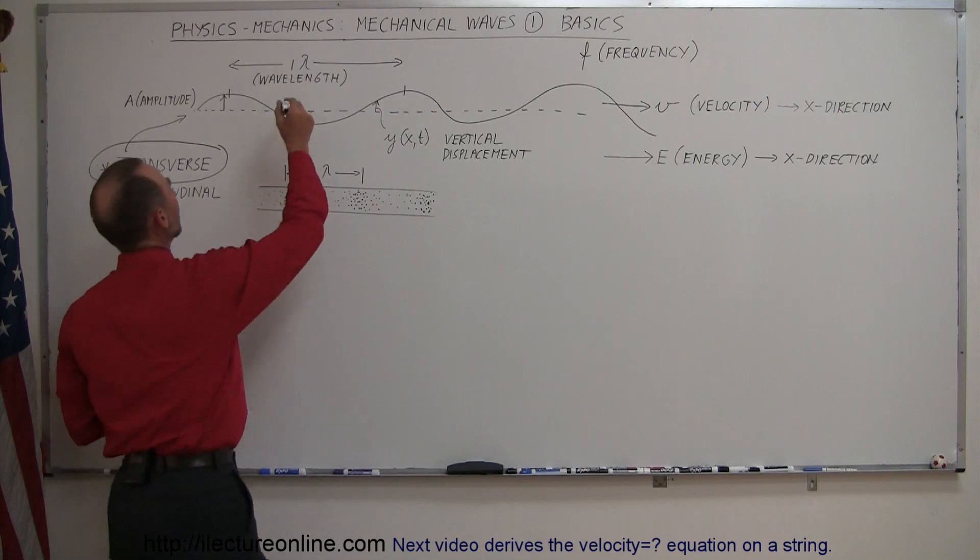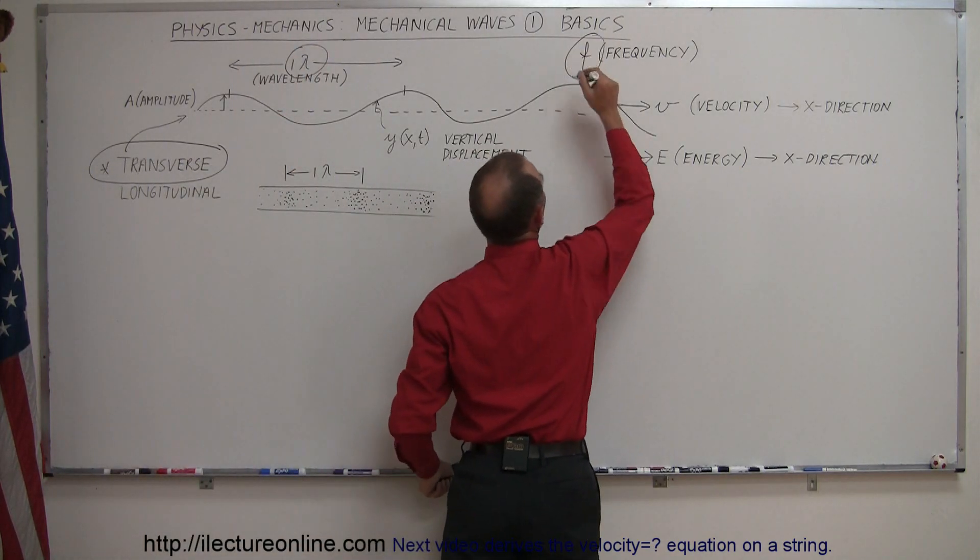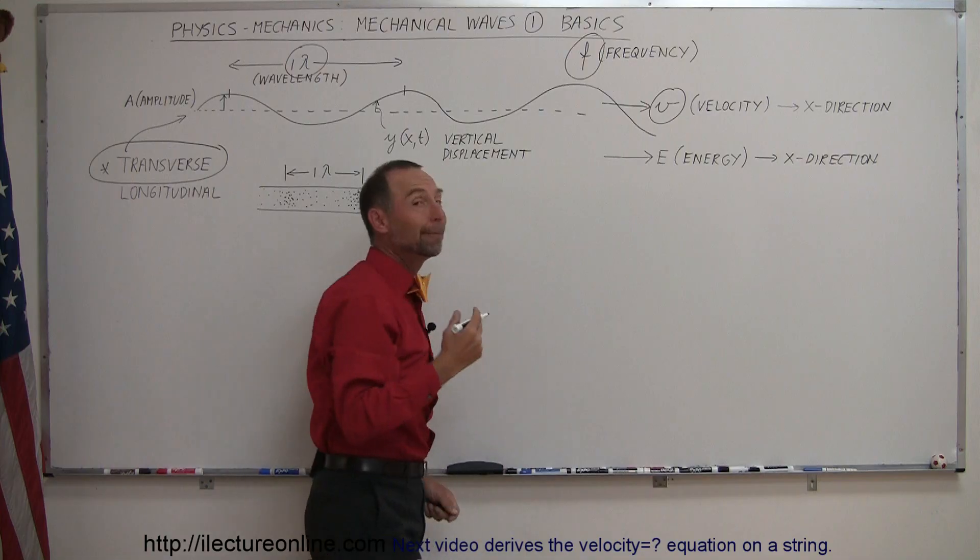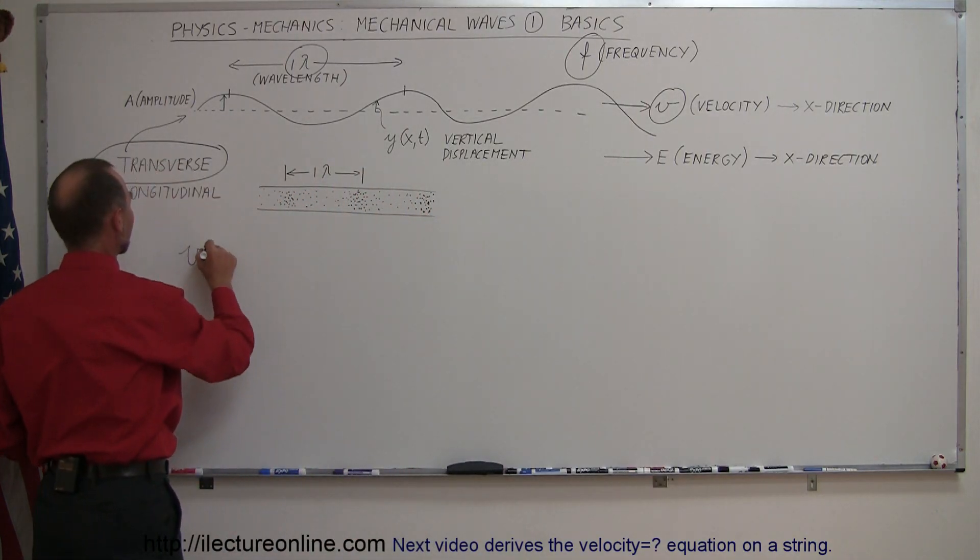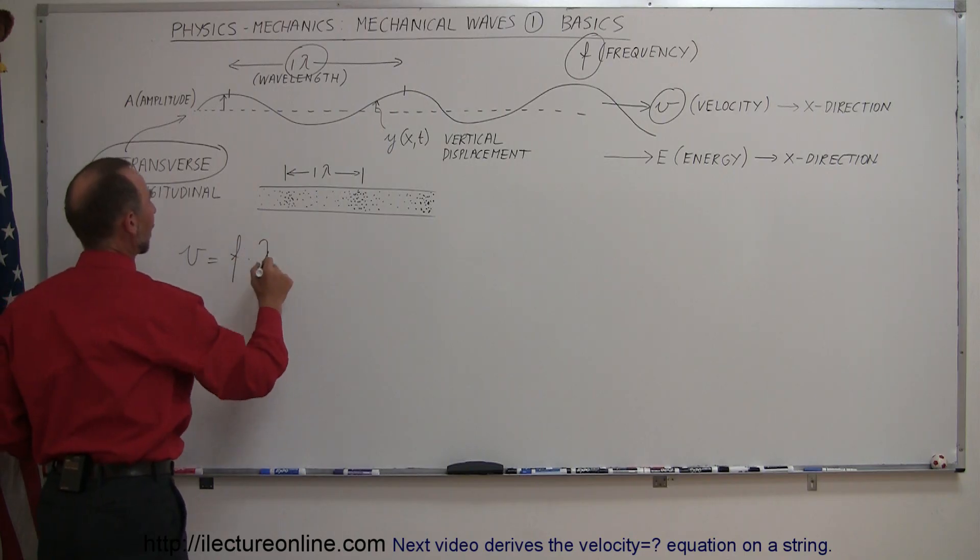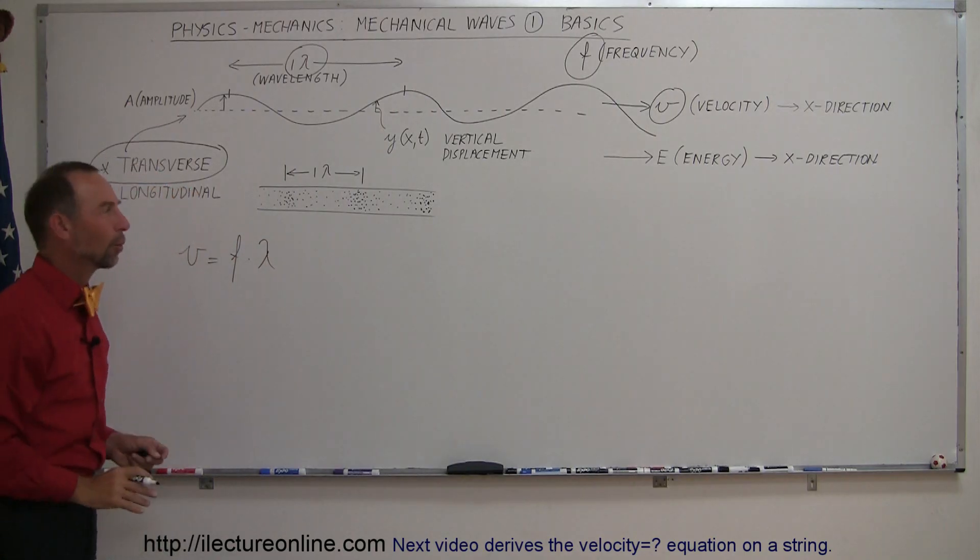Now when we put this together, the relationship between wavelength, frequency and velocity is a very basic combination, a very basic equation in physics. The velocity of any wave is equal to the frequency times the wavelength. So that's the basic equation.